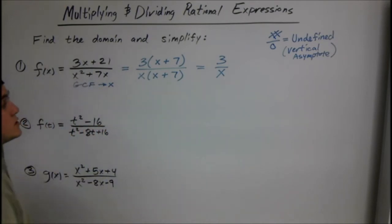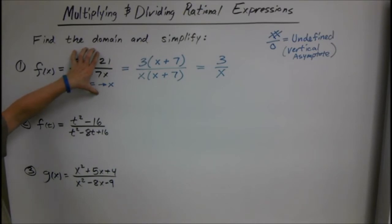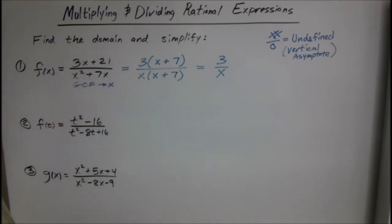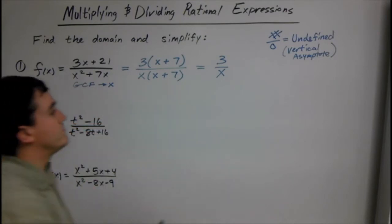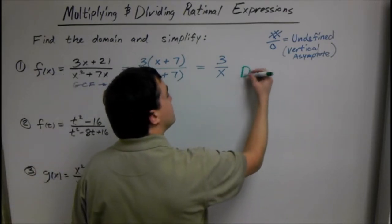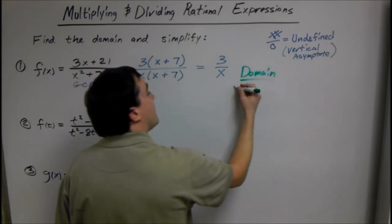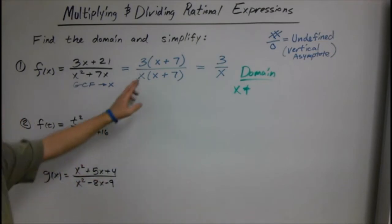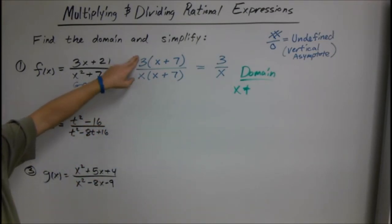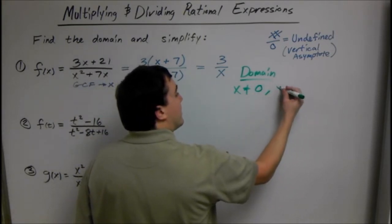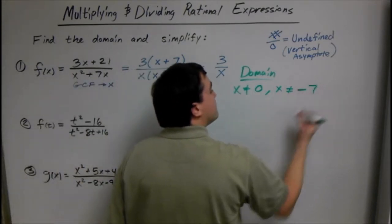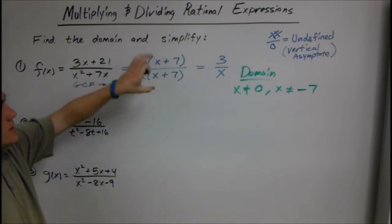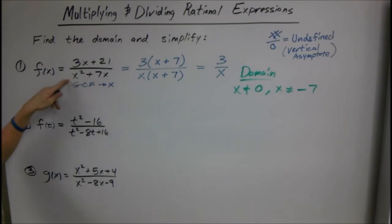The domain is a little bit different — you have to look at the original problem. What numbers can and can't I plug in? Since we can't divide by 0, we ask: what makes the denominator 0? So x is not allowed to be 0, because plugging in 0 gives a number divided by 0. Also, what number plus 7 equals 0? Negative 7. So x is also not allowed to be negative 7. That's the domain — you can't look at just the simplified version, because what makes the original function 0 on the bottom matters as well.